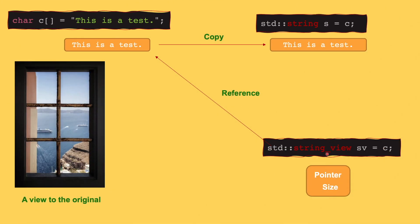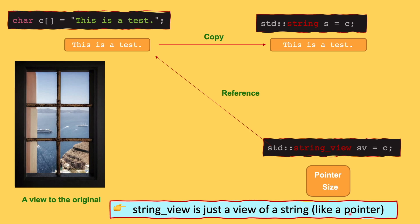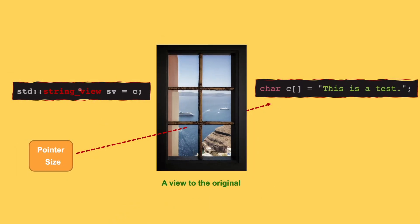And that's basically where string view takes its name from. Because a string view is a thin wrapper — it's really just a view to our original. By itself it doesn't have any new data, it doesn't have any heap allocation, it's just a view to our original data. This concept is kind of similar to pointers, because string view can be implemented using a pointer and a size that points to the original. And therefore, we call this a view to the original.